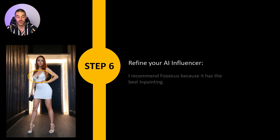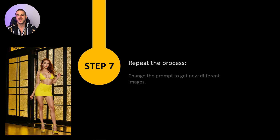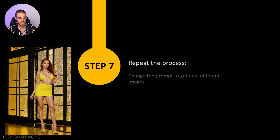In step six, you can further refine your AI influencer — I recommend Fooocus again because it has the best inpainting, and you can easily change details like breast size, hair color, and so on. Then in step seven, you just repeat the whole process by changing the prompt a little bit and you get a new scene, a new image of your AI influencer. As you can see here on the left side, it's super easy, it's fast, and it doesn't even cost you a lot of money. Now enjoy trying it out!